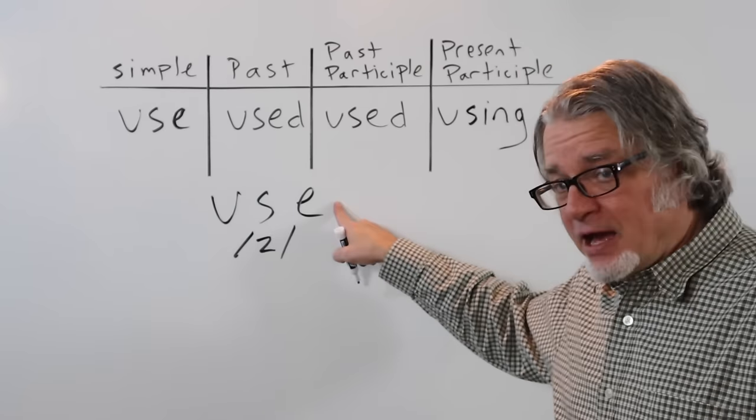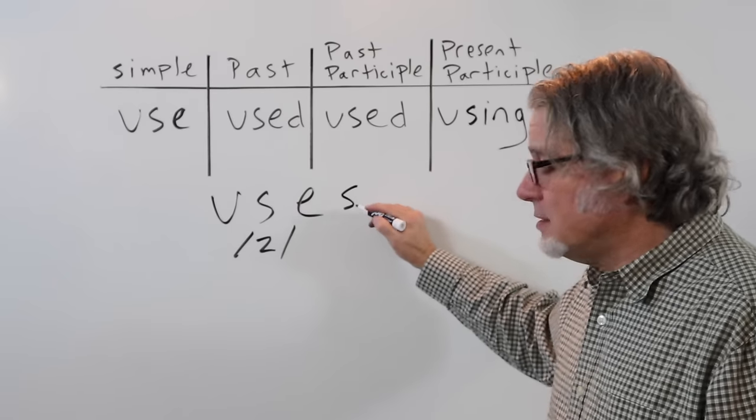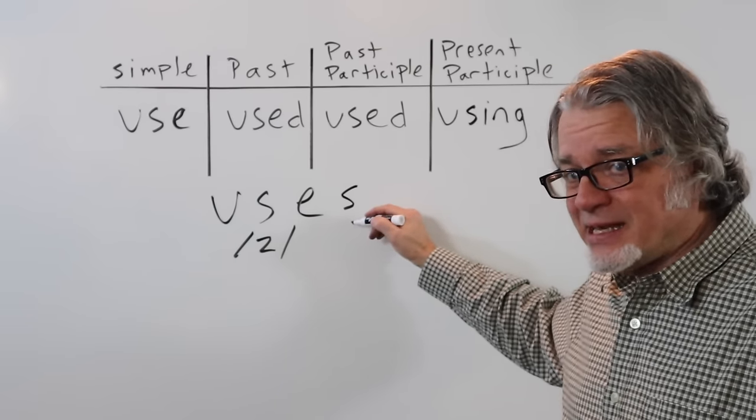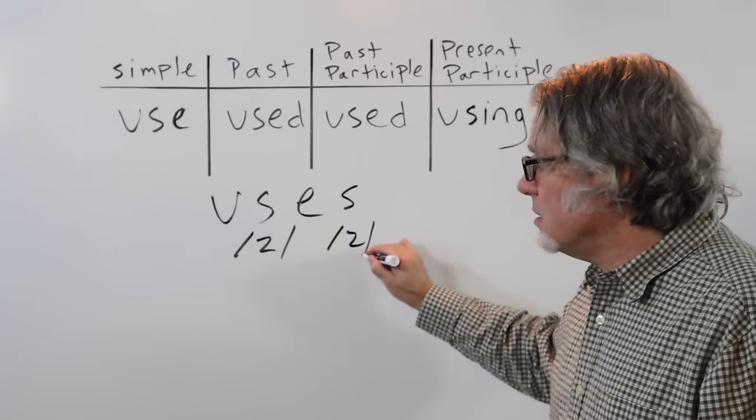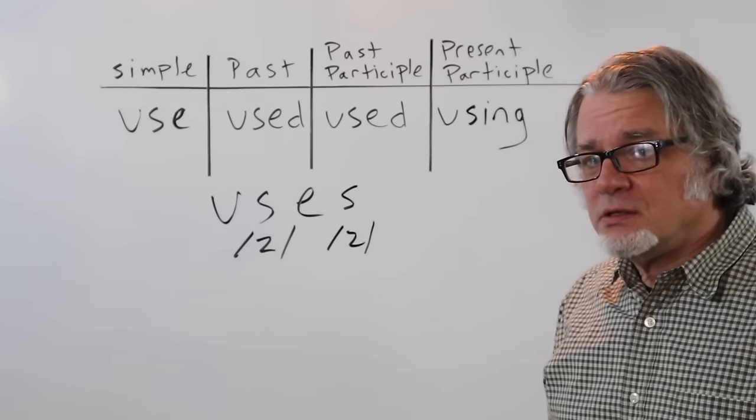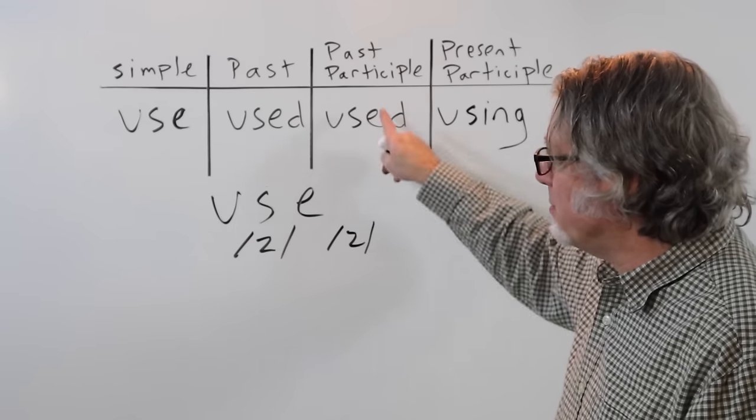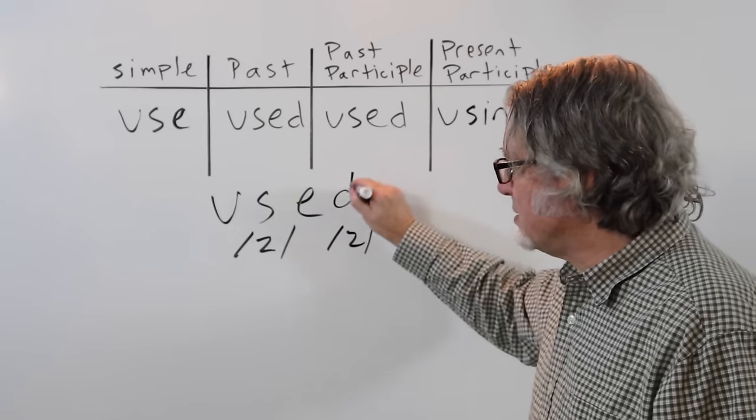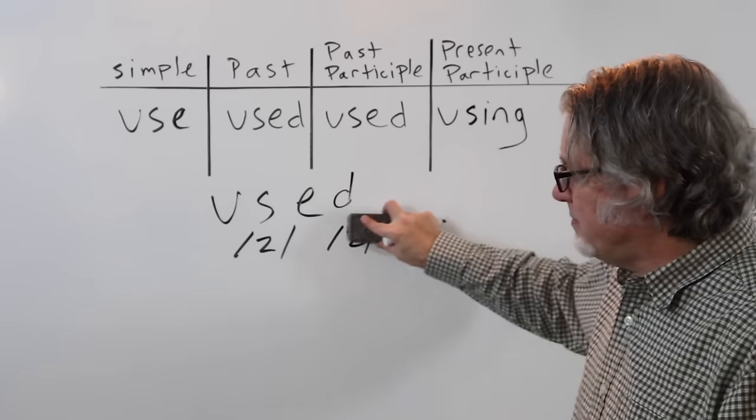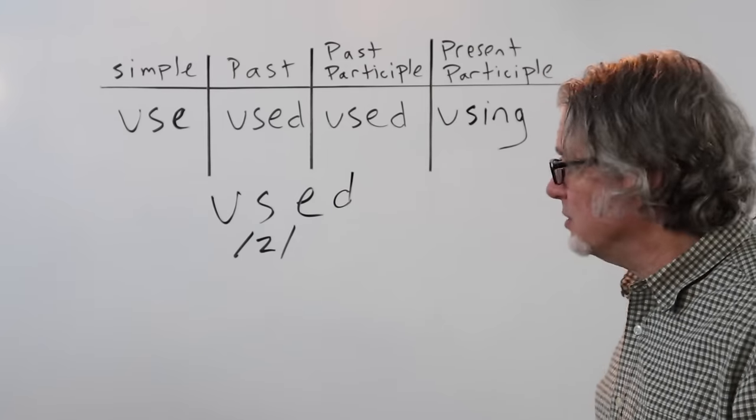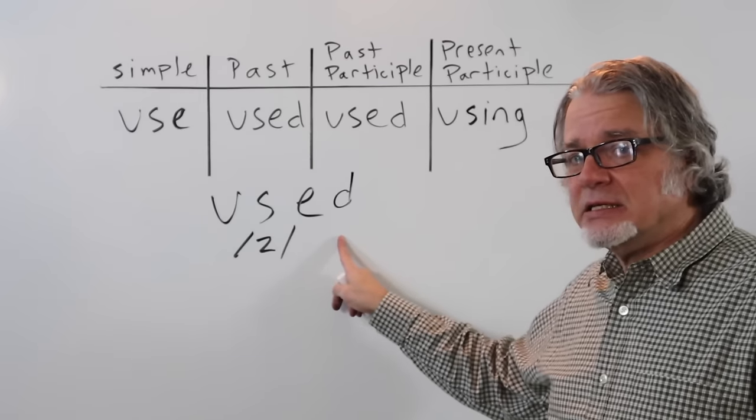If there's an S after it, this also is a Z sound, uses. When it's in the past tense or the past participle, this D is a voiced consonant sound, dzz, used.